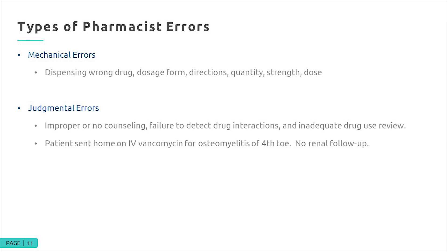Some judgmental errors can be critical. I know of a case where a patient was sent home on IV vancomycin through a nursing agency for osteomyelitis following a toe amputation. He was a type 2 diabetic, and unfortunately nobody ordered any renal follow-up. He felt ill, a doctor did blood work and found terrible kidney function. No one had followed up on the monitoring parameters — especially the renal parameters — for vancomycin therapy.